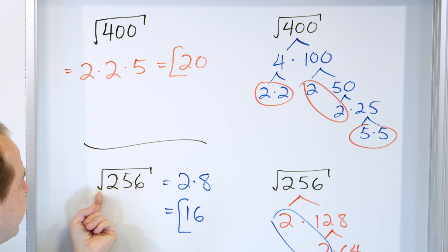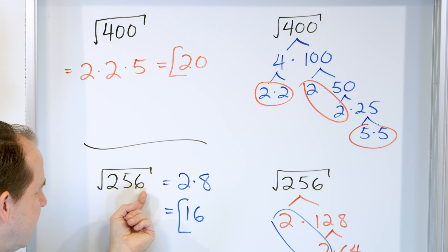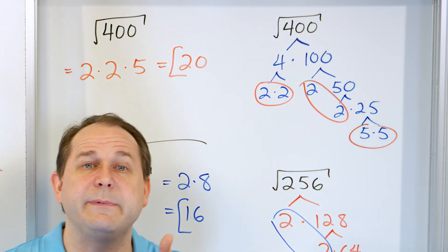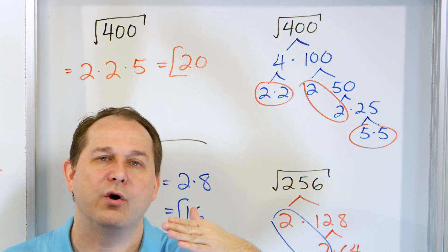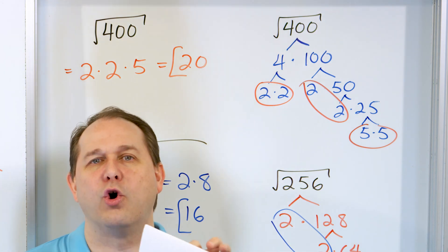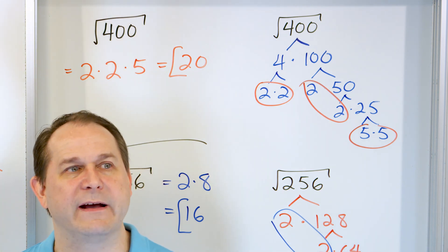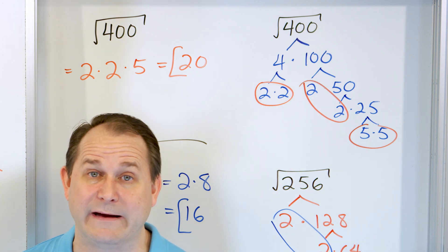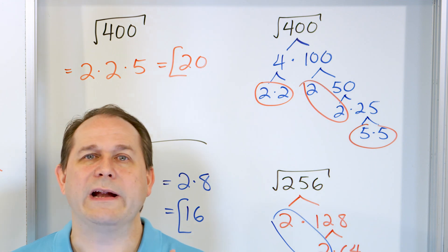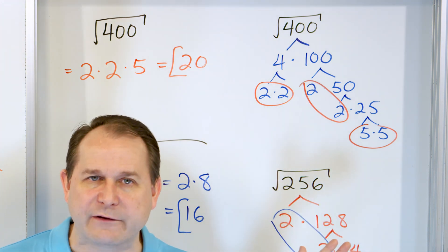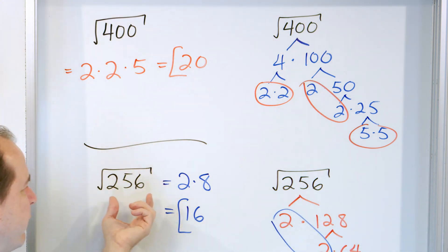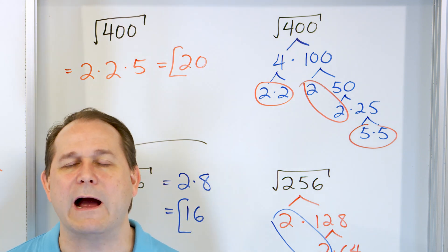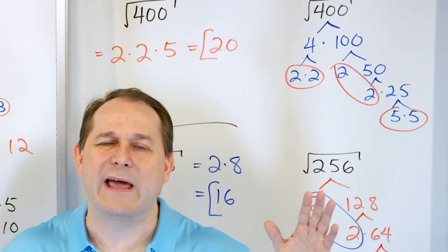But what if I change the problem slightly — instead of the square root of 256, what if it's the square root of 257? Suddenly it's going to be a little bit bigger than 16 but it's not going to be 17, because 17 times 17 is not 257. It's going to be some decimal — 16 point something. Those problems we'll do a little bit later. For a random number like the square root of 331, it's almost certainly not going to be a whole number. We learn perfect squares first so you can check your work easily.